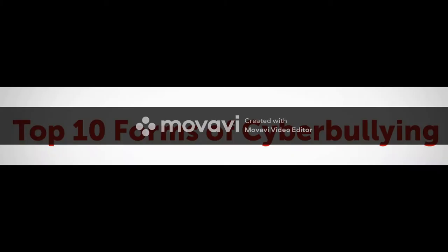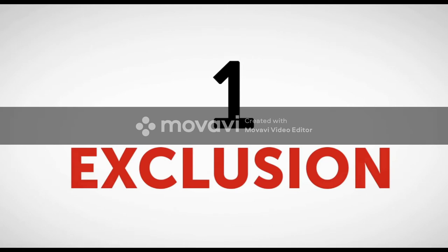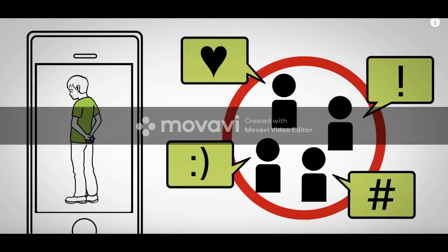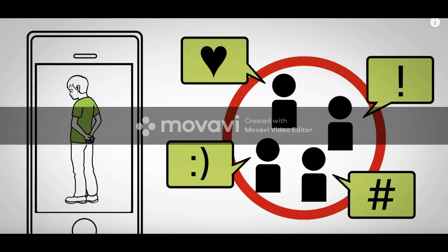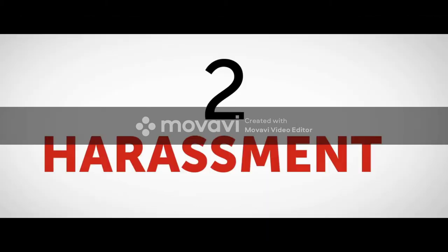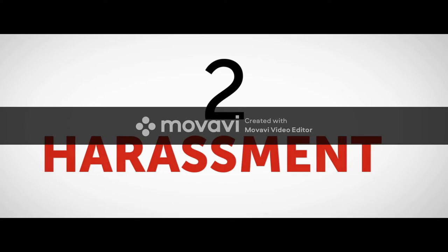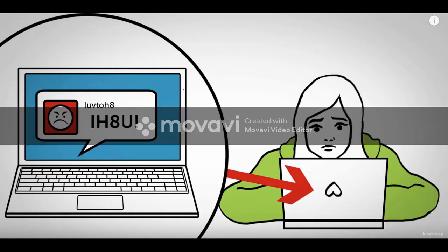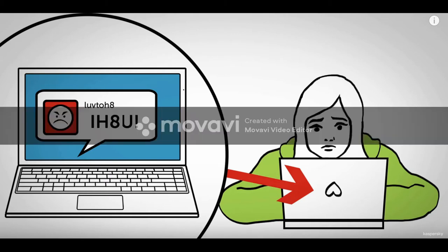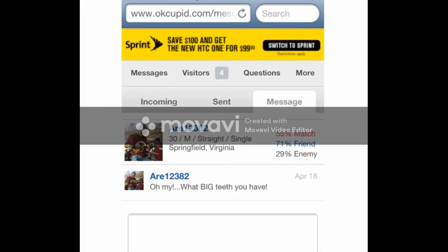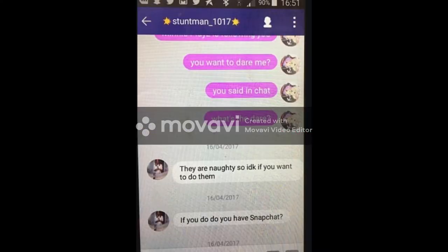Ten forms of cyberbullying. Number one: exclusion — being left out from the latest technology, being pushed out at school, on social media platforms and things like that. Number two: harassment — going on social media and constantly getting harassed and bullied, maybe also in a group of friends that your child actually thinks are friends, but they might actually be bullying on a social media group. This can seriously affect a child's well-being.